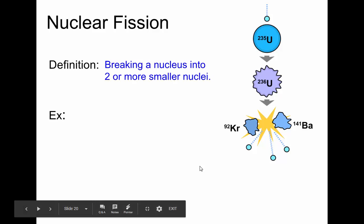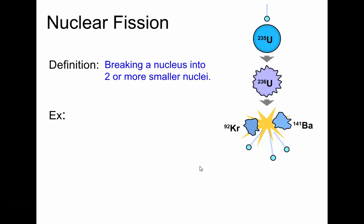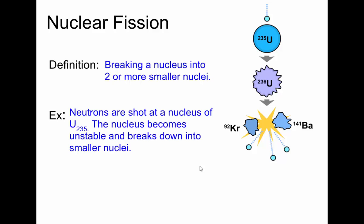Nuclear fission is the breaking apart of a nucleus of an atom into two smaller nuclei. Here in this diagram, you have a nucleus of uranium-235. When it's hit with a neutron, it will become unstable and then split into two other nuclei, krypton and barium, and in the process will also release three more neutrons. So that is nuclear fission, the splitting of the nucleus.